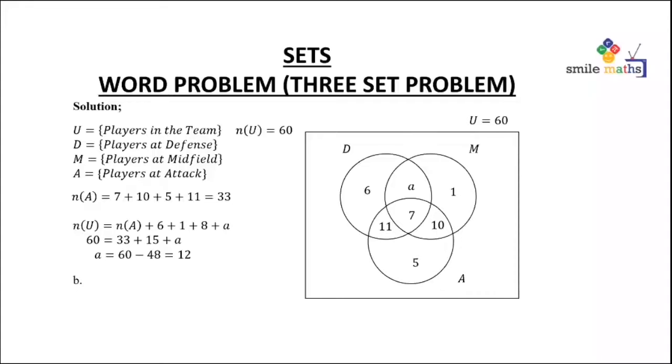So for number of elements in U, we are going to have number of elements in A, plus D only which is 6, plus M only which is 1, plus the 8 people who do not play any of the positions, plus a. So 60 equals 33 plus 15 plus a. So a becomes 60 minus 48, giving us 12. So the 12 here stands for those who play defense and midfield only.